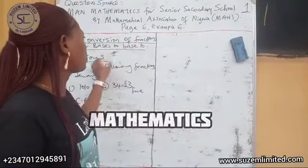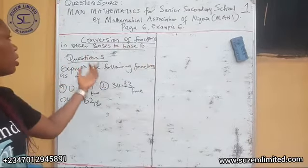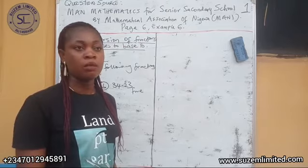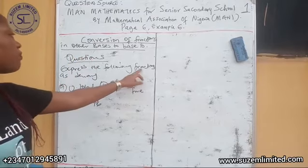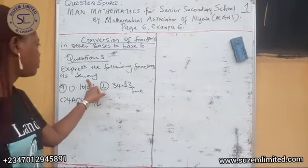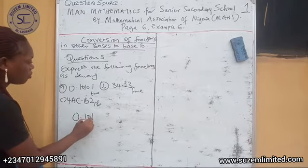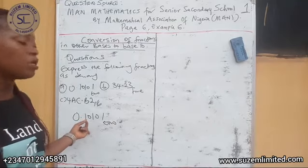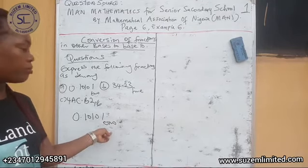I'm going to look at the conversion of fractions in other bases to base 10. Conversion of fractions in other bases to base 10 is the same as conversion of a number to base 10 — also called denary. For example, we are given a question here. They ask us to express the following fractions as denary, that is, base 10. Number one asks us to express 0.10101 in base 2 to denary, that is, to express this to base 10.